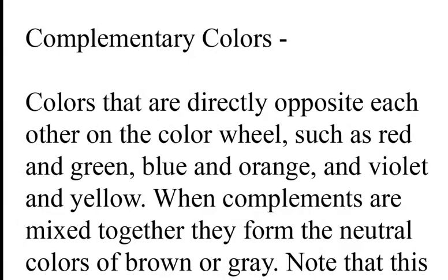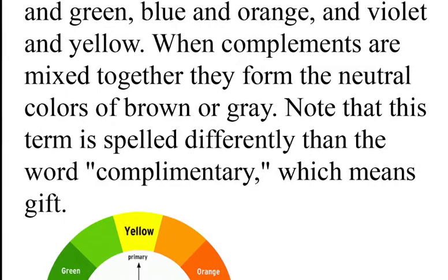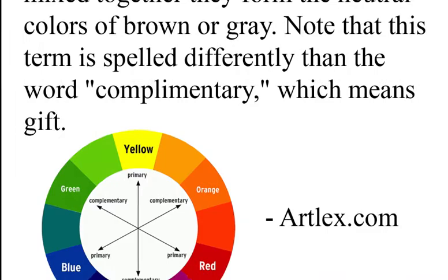Complementary colors are colors that are directly opposite each other on the color wheel, such as red and green, blue and orange, and violet and yellow. When complements are mixed together, they form the neutral colors of brown or gray. Note that this term is spelled differently than the word 'complimentary,' which means gift.